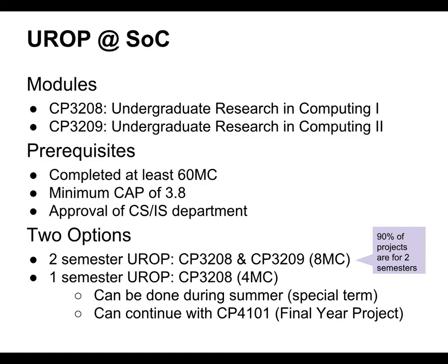You need approval from the CS or IS department to take UROP — that's basically me rubber-stamping what your advisor says. We have two different versions of UROP: the two-semester version where you do both modules in series, and the one-semester version which is just the first one. You can do that during the summer, or you can think of it if you want to postpone it, for example if you're going for SEP.